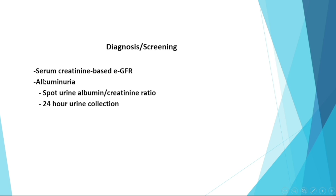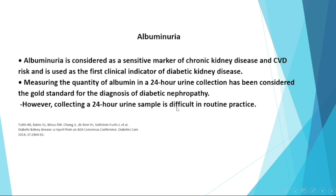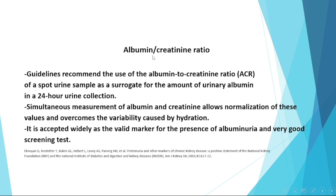For diagnosis and screening: serum creatinine-based eGFR and albuminuria testing are used — either by spot urine albumin-to-creatinine ratio or 24-hour urine collection. Albuminuria is considered a sensitive marker of chronic kidney disease and cardiovascular risk, and is used as a first clinical indicator of diabetic kidney disease. Measuring albumin in a 24-hour urine collection has been considered the gold standard for diagnosing diabetic nephropathy; however, 24-hour collection is difficult in routine practice.